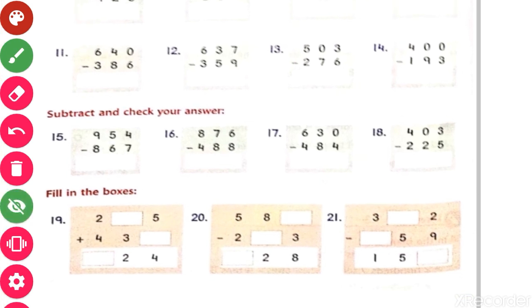Now question number 12 will be done by you only. I am not going to explain this one. Do it: 637 minus 359.